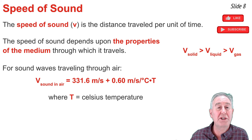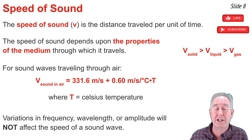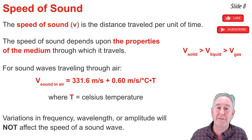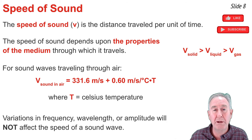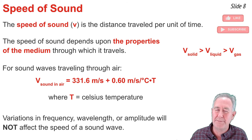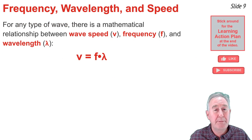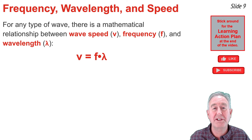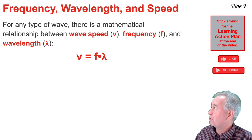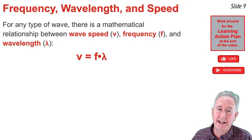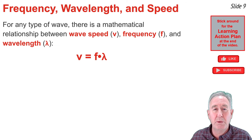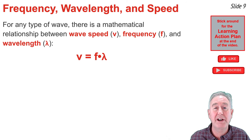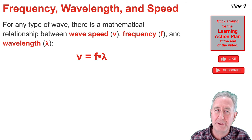The speed of sound is not dependent upon the frequency, wavelength, or amplitude of the sound wave — it is fully dependent upon the properties of the medium. For any type of wave, there is a mathematical relationship between wave speed, frequency, and wavelength given by the equation V = f × λ. The speed of a wave is determined by the properties of the medium and is not affected by variations in frequency, wavelength, or amplitude.